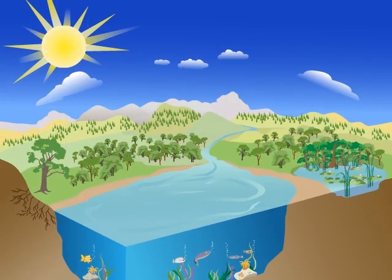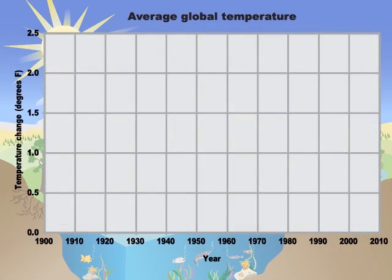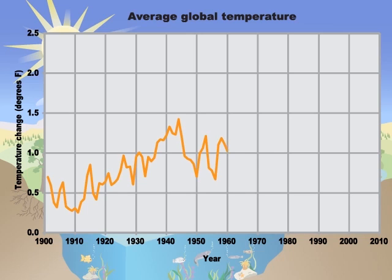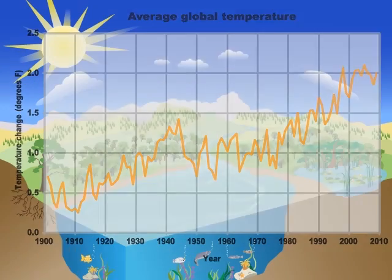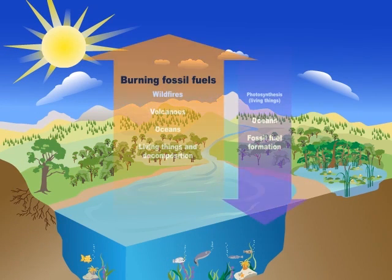Carbon dioxide is a greenhouse gas, which means it traps heat in the atmosphere and keeps the Earth warm. So all this extra carbon dioxide is making the Earth warmer and causing the climate to change. It's a big problem, but we can solve it.